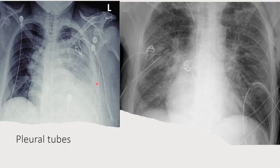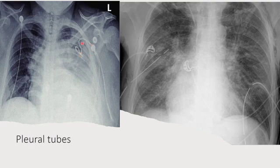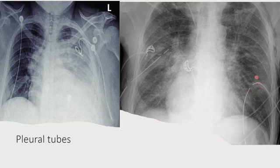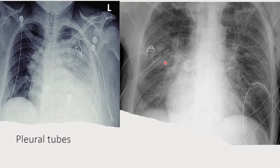These two images show a pleural pigtail drain and surgical chest tubes. Pleural pigtail drains are typically placed by interventional radiology or the pulmonary team for pneumothorax or simple pleural effusion. These have multiple side holes, and you want all side holes to be within the thoracic cavity. Surgical chest tubes also have a break on the radiopaque marker at the last side hole, which must be within the thoracic cavity. If the second break is outside the thoracic cavity, the tube is too far out and needs to be repositioned.